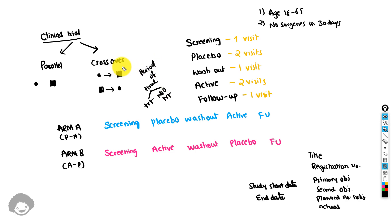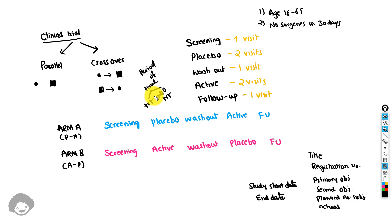Every trial can be divided into periods of time where the subject may receive treatment or no treatment. The periods where subjects are not receiving treatment could be screening, washout, or follow-up. The periods where a subject is receiving a treatment will be dependent on the specific treatment the subject is taking. For example, if a subject receives placebo first and then active, there will be a period for placebo and a period for active medication. These periods of time are called elements.